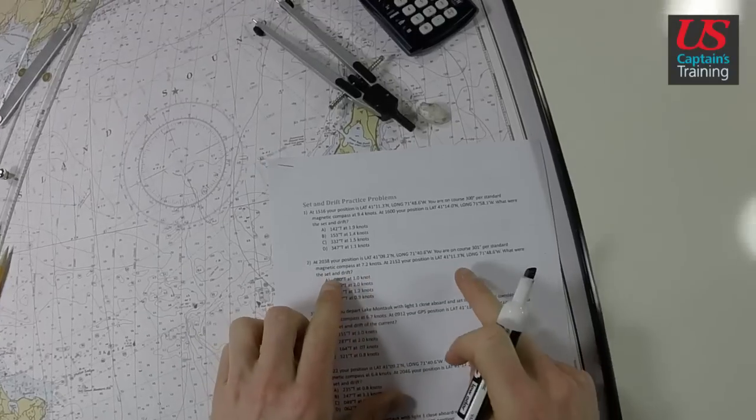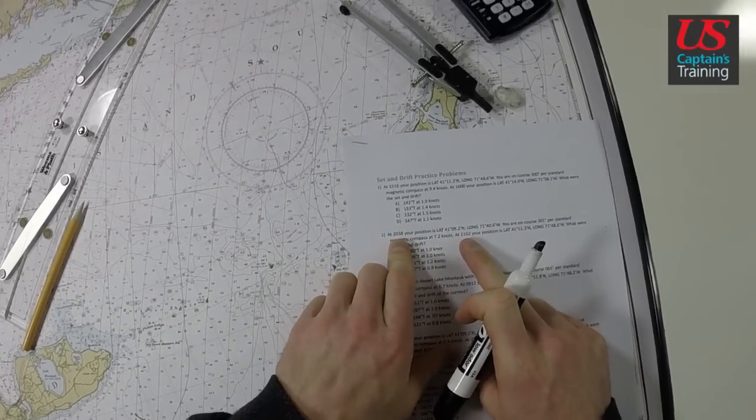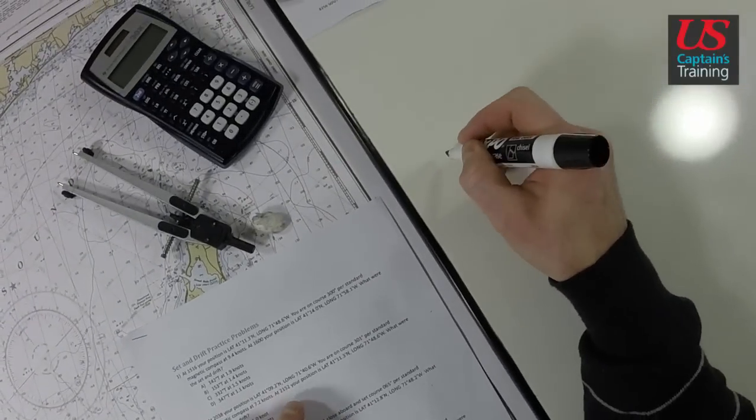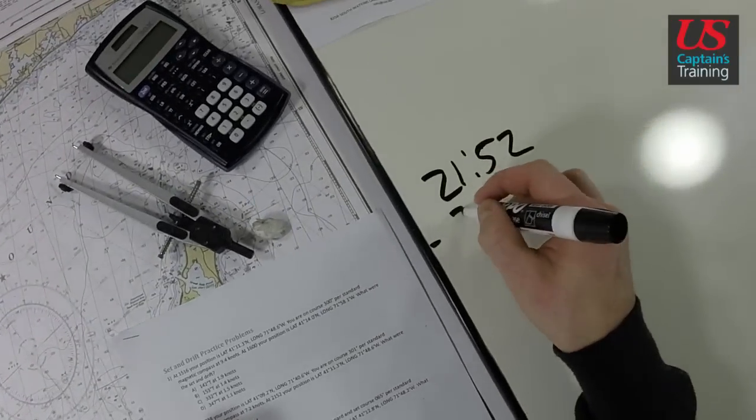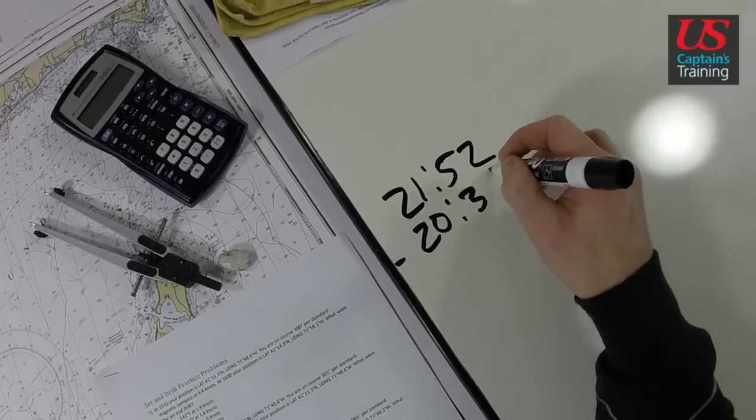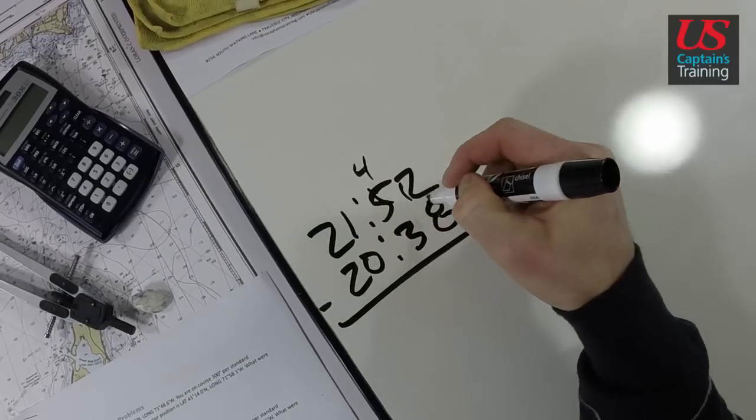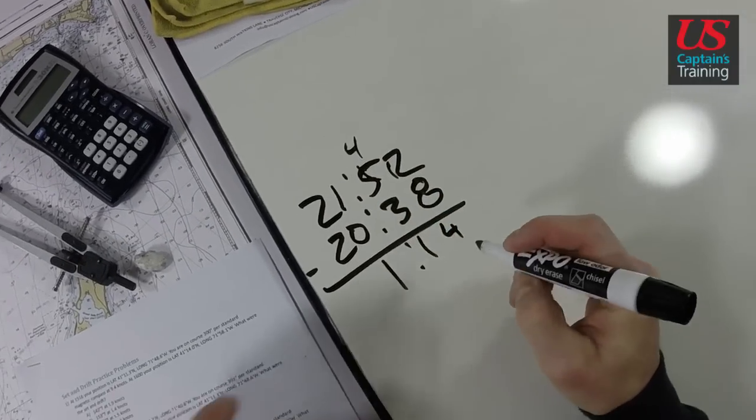First we're going to find the time. End time 2152 minus the start time 2038. So we say 2152 minus 2038. I'm going to borrow here, 12, that's 4, 14, 1, 1 hour 14 minutes.